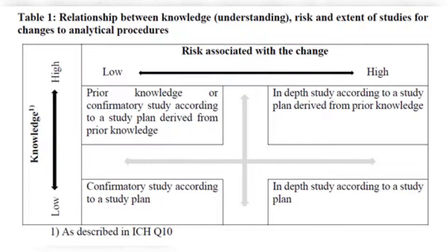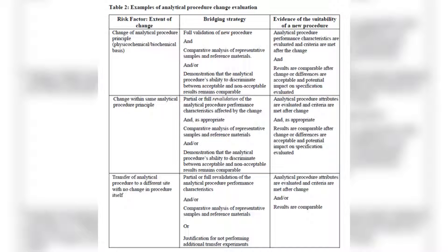Analytical procedures may undergo changes throughout a product's lifecycle, including modifications or introductions of new technologies. Such changes are driven by process knowledge, analytical procedure knowledge, and the goal of continual improvement. ICH Q12 provides tools for managing these changes, including risk-based change categorization, established conditions (ECs), post-approval change management protocols (PACMs), product lifecycle change management documents, and the Pharmaceutical Quality System (PQS). Changes are reported as per regional requirements, with risk assessments defining reporting categories, ensuring effective change management and continuous evaluation of analytical procedure performance.